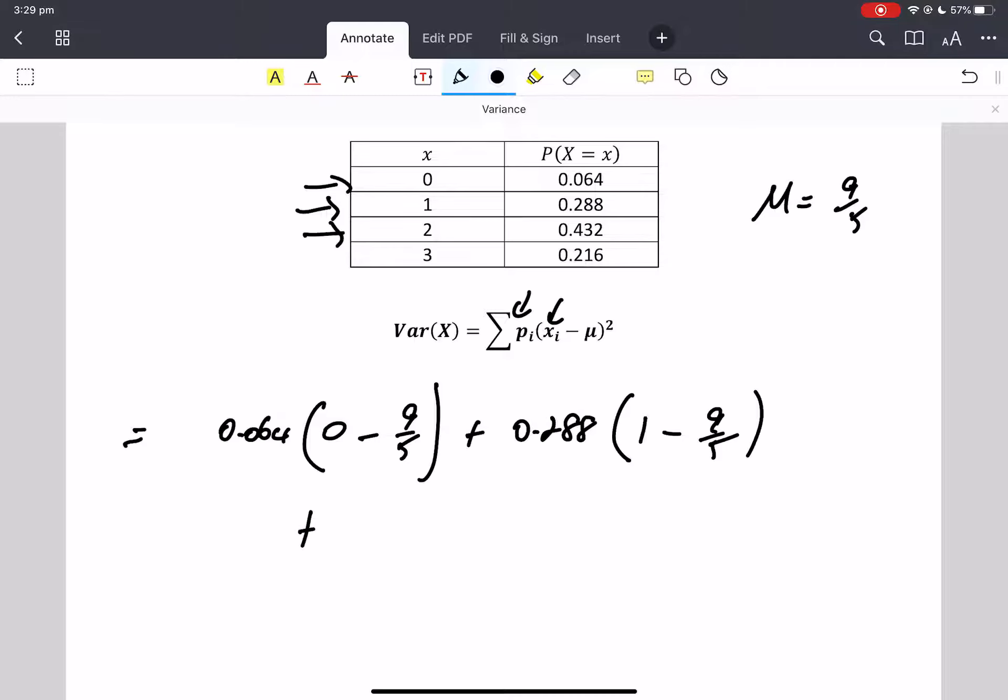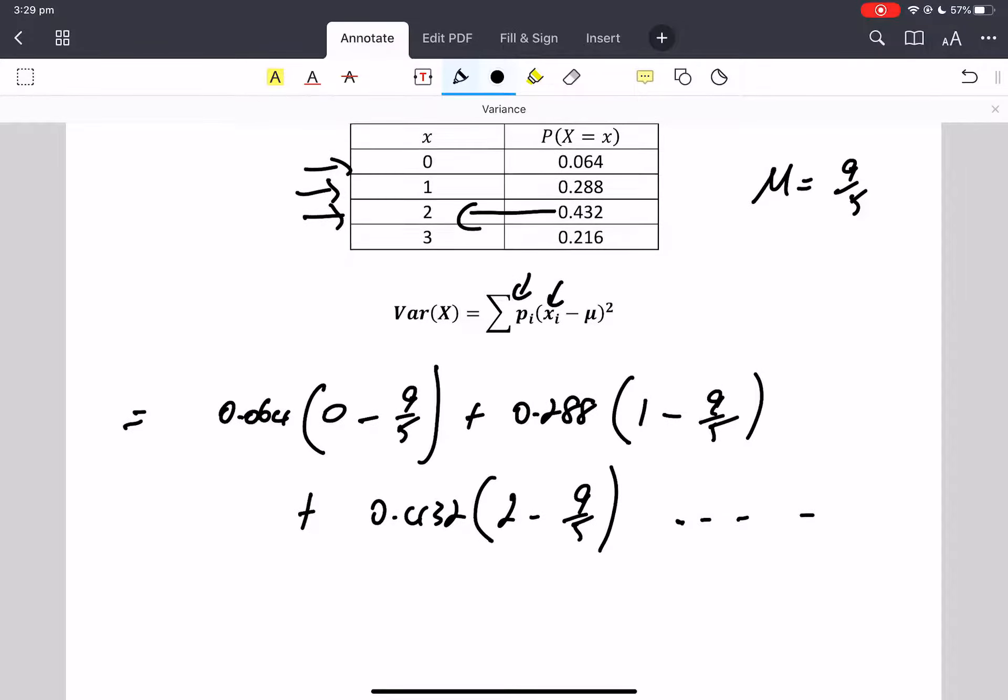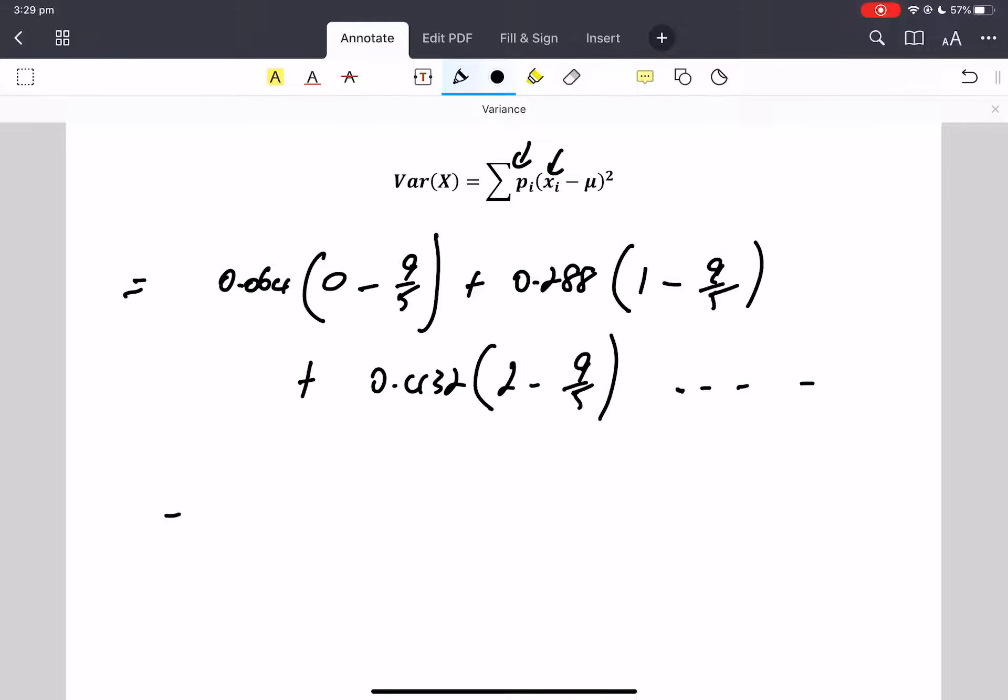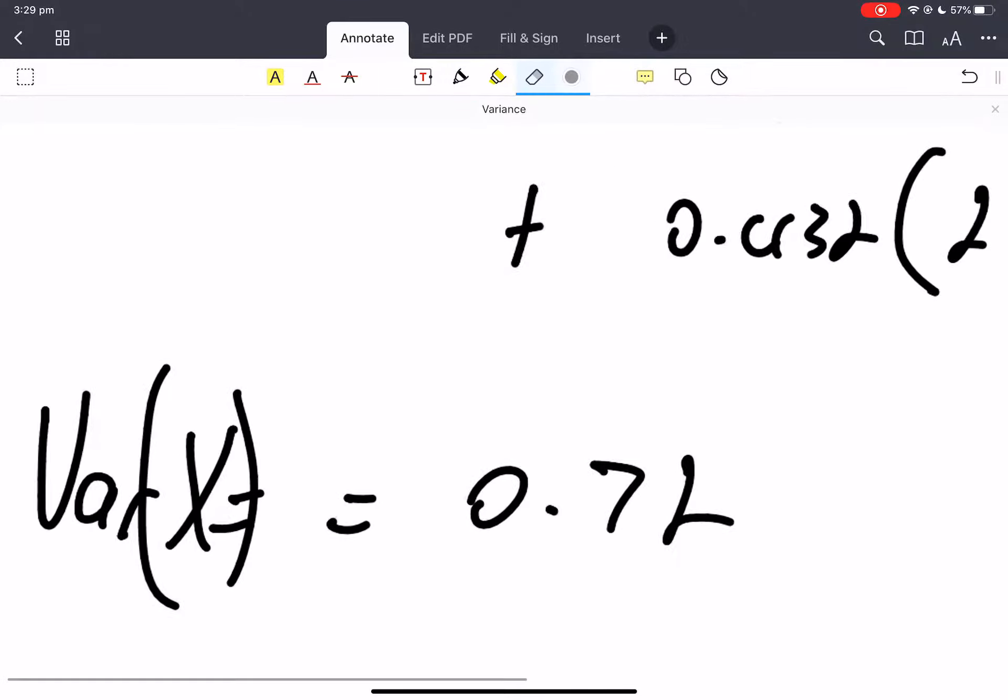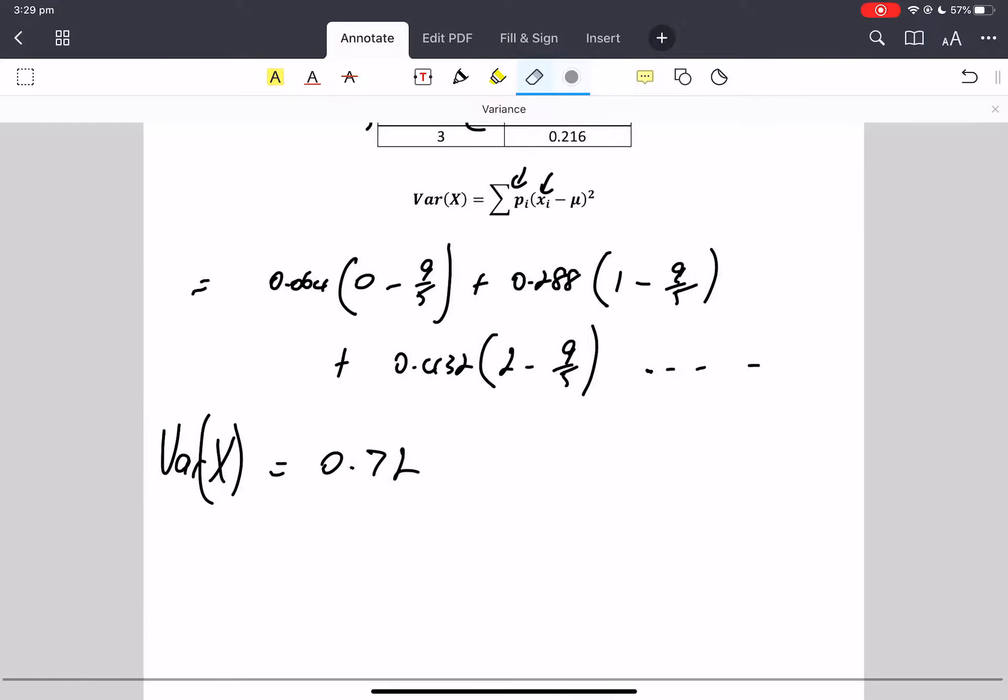The probability in that third line is 0.432. And then it's the x is 2 minus mu. And we're going to keep going on there. And we're going to get an answer 0.72. So the variance of x equals. Sorry about that. Didn't think about that too much.